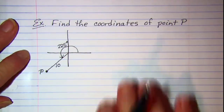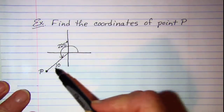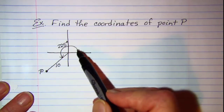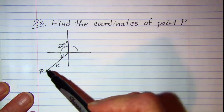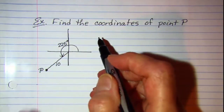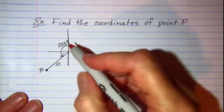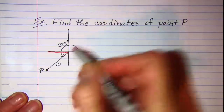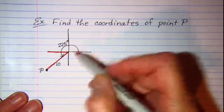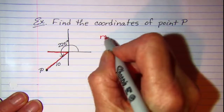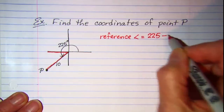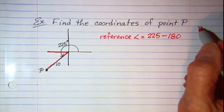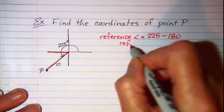Let's do another problem. We are asked to find the coordinates of point P, which is in quadrant 3. We have an angle of 225 degrees — the terminal side of that angle goes through point P, and the vector length is 10. We can find the reference angle, formed by the x-axis and the terminal side, by taking 225 and subtracting 180, so our reference angle is 45 degrees.